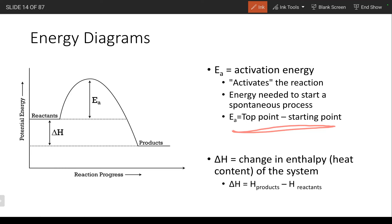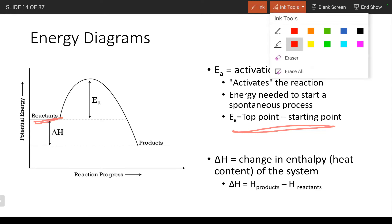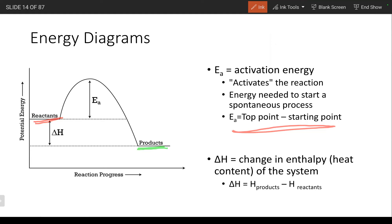With the reverse reaction, it's the same idea — we still have to get to the top point. It's just that with the reverse reaction, we're reading the graph backwards, so we switch what we consider the reactants and the products. For the forward reaction, we have the top point minus the reactants. But if we're looking at the reverse reaction, we have the top point minus the other side, because in this case we're going in the opposite direction.